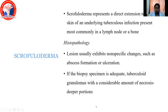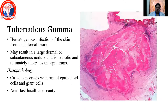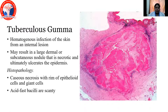Coming to scrofuloderma, it presents as a direct extension into the skin of underlying tuberculosis infection, most commonly from the lymph node or bone. Histopathology usually exhibits non-specific changes such as abscess formation or ulceration. If the specimen is adequate, tuberculoid granulomas with a considerable amount of necrosis will be seen in the deeper portion of the skin. Coming to tuberculosis gumma, it is a hematogenous infection of skin from an internal lesion resulting in a large dermal or subcutaneous nodule that is necrotic and ultimately ulcerates the epidermis. Histopathology shows caseous necrosis with a rim of epithelioid cells and giant cells, and acid-fast bacilli are very scanty. This picture shows caseous necrosis with the rim of epithelioid cells and giant cells around it.